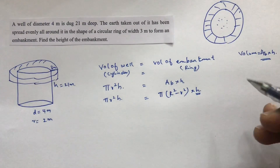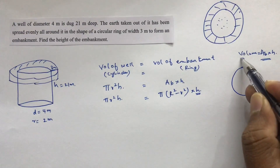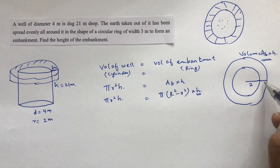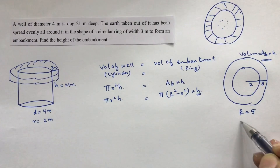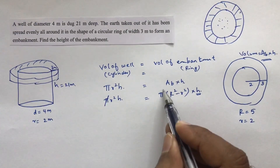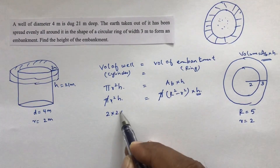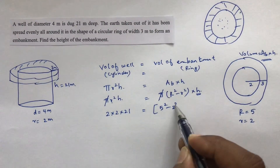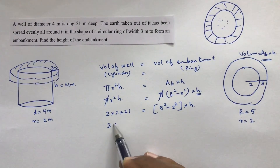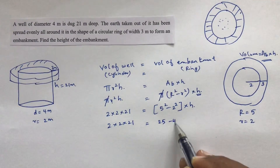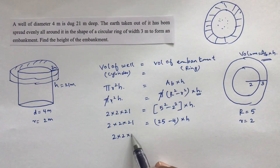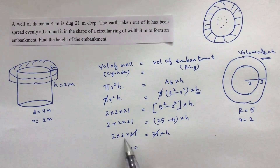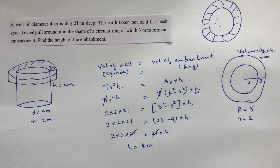The well has radius 2 meters, and the embankment width is 3 meters, so capital R equals 5 and small r equals 2. Setting volumes equal: π cancels, giving 2² × 21 = (5² − 2²) × h, so 4 × 21 = 21h, and 21 cancels, giving height equals 4 meters. The height of the embankment is 4 meters.